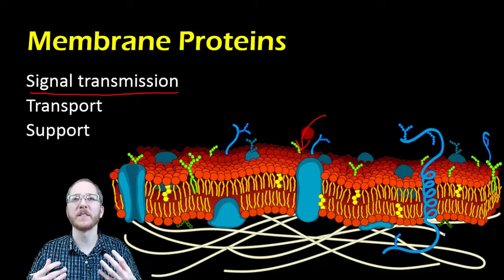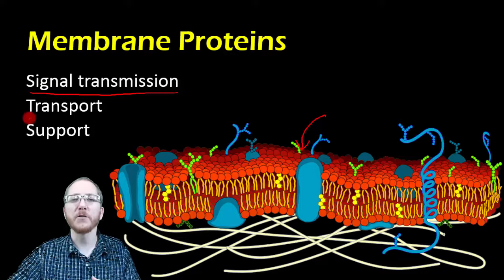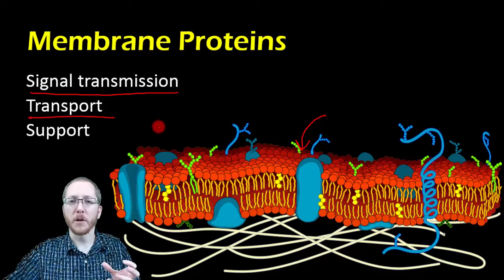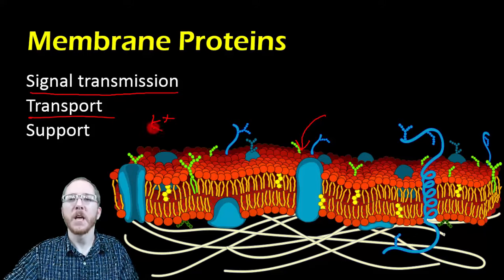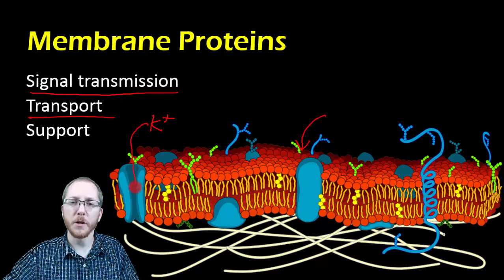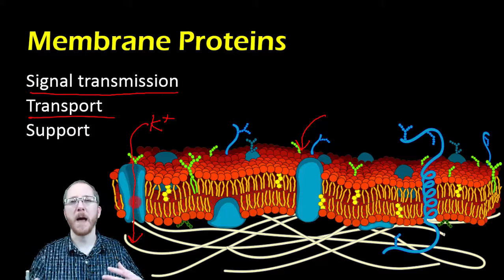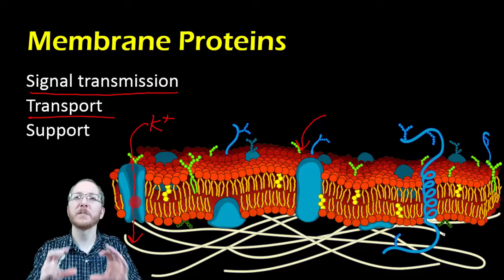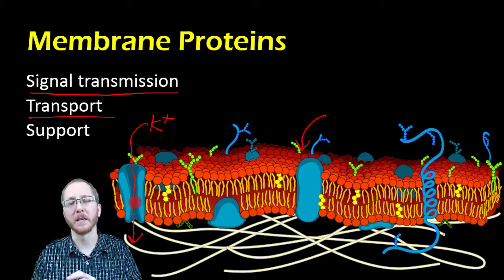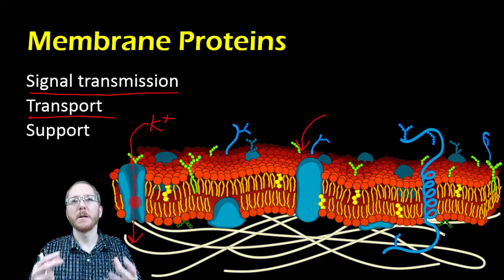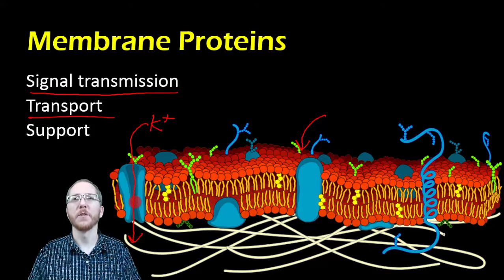Membrane proteins also serve a vital transport function. Some proteins have a channel within them, and if you're a charged molecule — like potassium K+ — you can't get through the phospholipid bilayer because the hydrophobic nonpolar middle hates you. Instead, you go through specialized channels that allow K+ to pass through. There are many different proteins, each specializing — much like enzymes — in letting one specific molecule through, vital for molecules that are too big, too polar, or ionic to otherwise cross the bilayer.